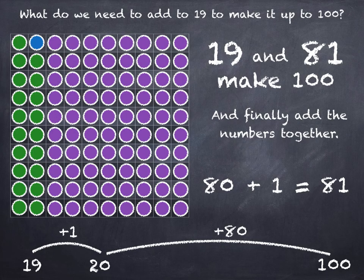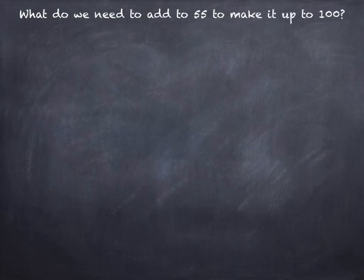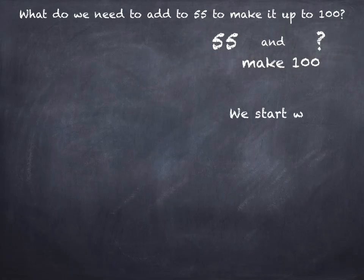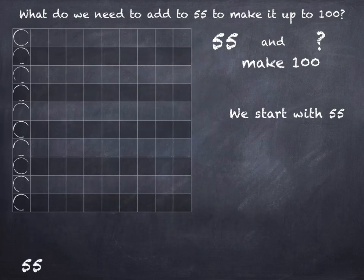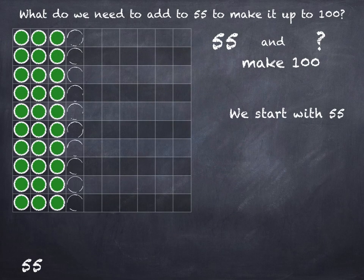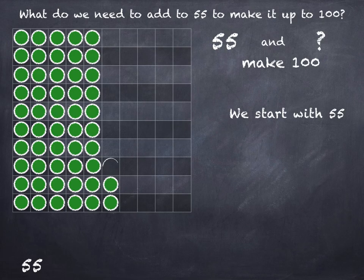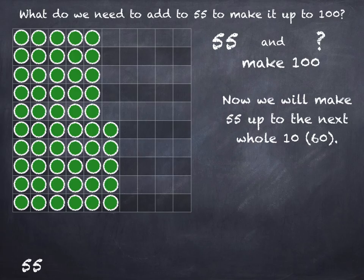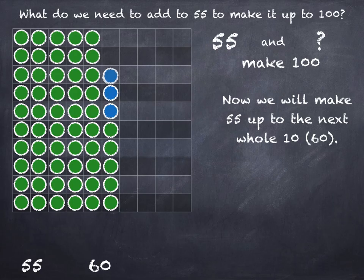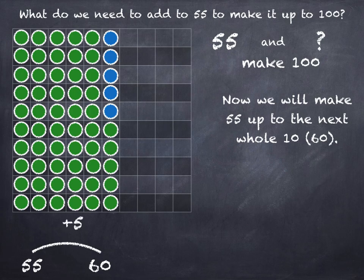Last one. What do we need to add to 55 to make up to 100? 55 and what is 100? Let's start with 55 — that's 5 tens and 5 units. And now we'll make 55 up to the next whole 10, which is 60. What do we have to add on to 55 to get to the next whole 10? Use your number bonds to 10 — 5 and what make 10? So 55 plus 5 takes us to 60.